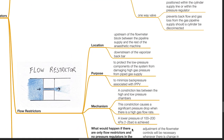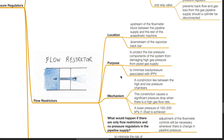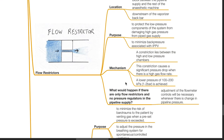Flow restrictor. It is located upstream of the flow meter block between the pipeline supply and the rest of the anesthetic machine, or downstream of the vaporizer backbar. Purpose: to protect the low pressure components of the system from damaging high gas pressure from piped gas supply and to minimize backpressure associated with intermittent positive pressure ventilation. Mechanism: a constriction lies between the high and low pressure chambers. This constriction causes a significant pressure drop when there is high gas flow rate. A lower pressure of 100 to 200 kPa or 1 to 2 bar is achieved.